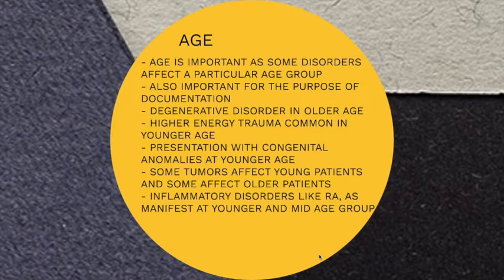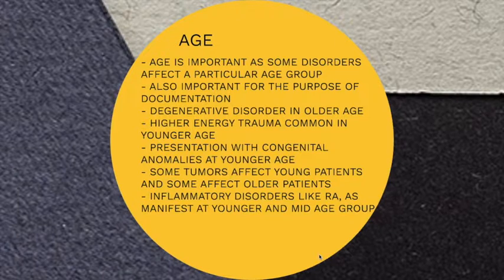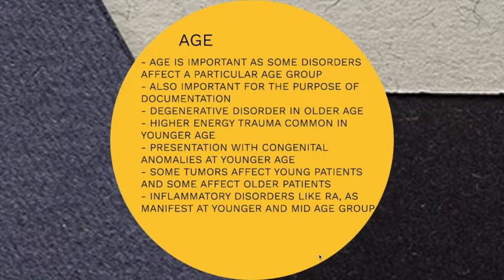You have to ask about the age of the patient because several orthopedic disorders have a predilection to a particular age group. It is also important for documentation purposes. Several degenerative disorders are common in older age groups. High energy trauma usually occurs in younger age groups. Presentation with congenital anomalies occurs at younger age. Some tumors affect young patients while some have predilection to older patients. Inflammatory disorders like rheumatoid arthritis and ankylosing spondylitis manifest at a younger or mid-age group.